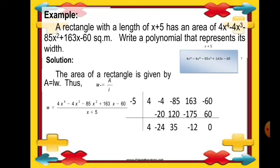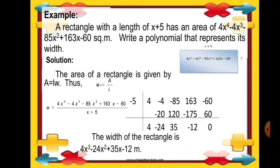The degree of our dividend is 4 and the degree of our divisor is 1, so the degree of the quotient is 3. Therefore, the width of the rectangle is 4x cubed minus 24x squared plus 35x minus 12 meters.